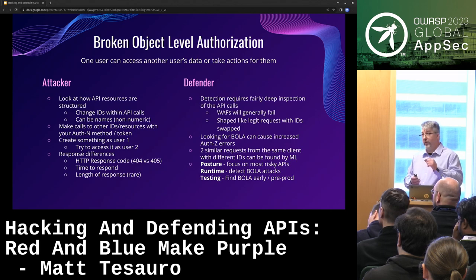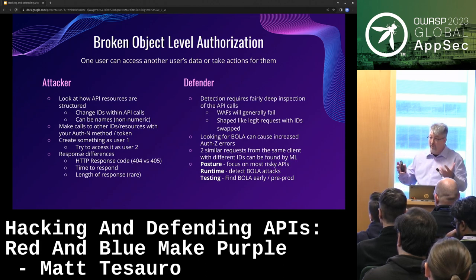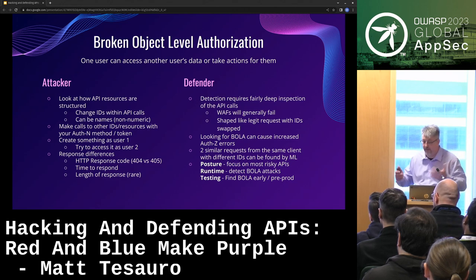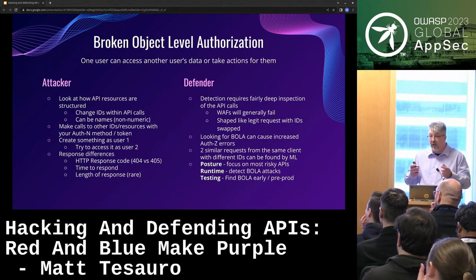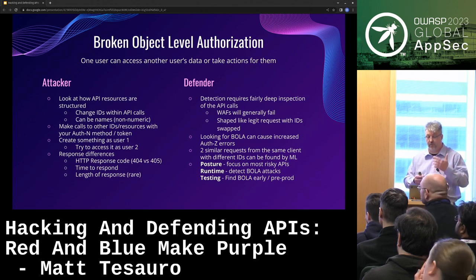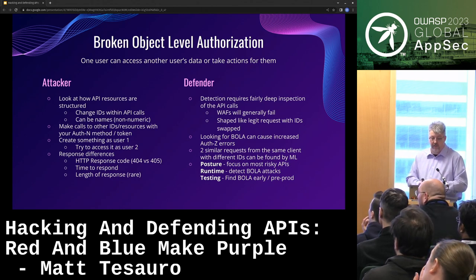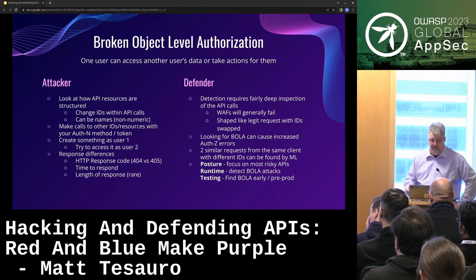Or, if you have really good inspection, you may see two different requests from the same client in a short period of time — though it could also be two people behind a proxy, so it's not a great indicator. Posture focuses on the most risky apps. Runtime, with deep enough inspection, can detect BOLA attacks. Testing — your testing tool or framework should have the ability to find BOLA and play around with authorization requests. That really depends on whether you have an API-specific tool.